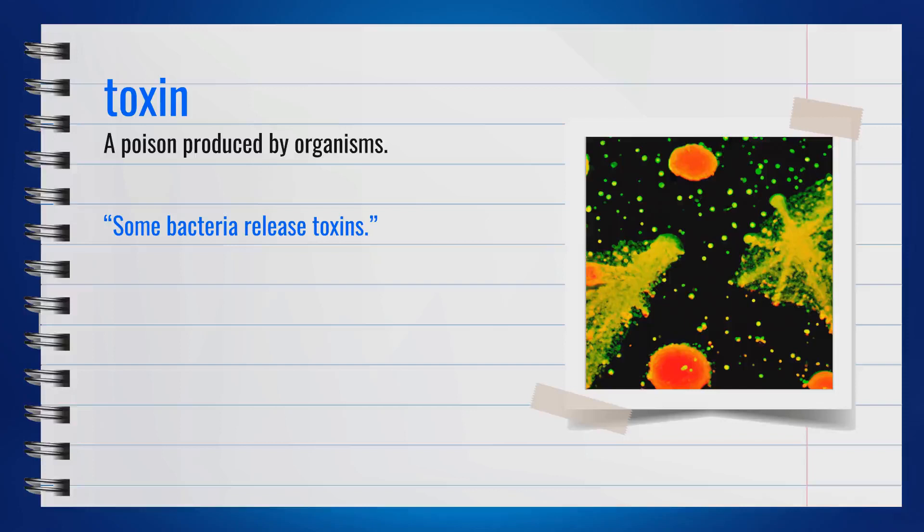The word toxin is a noun. A toxin is a poison produced by organisms. Synonyms include poison or venom. For example, some bacteria release toxins. In summary, a toxin is a poison produced by living organisms.